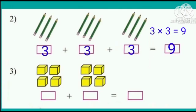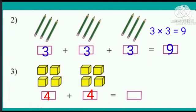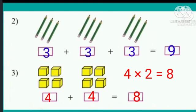There are two groups of boxes and each group has four boxes. So four plus four is equal to eight. We are adding four two times.